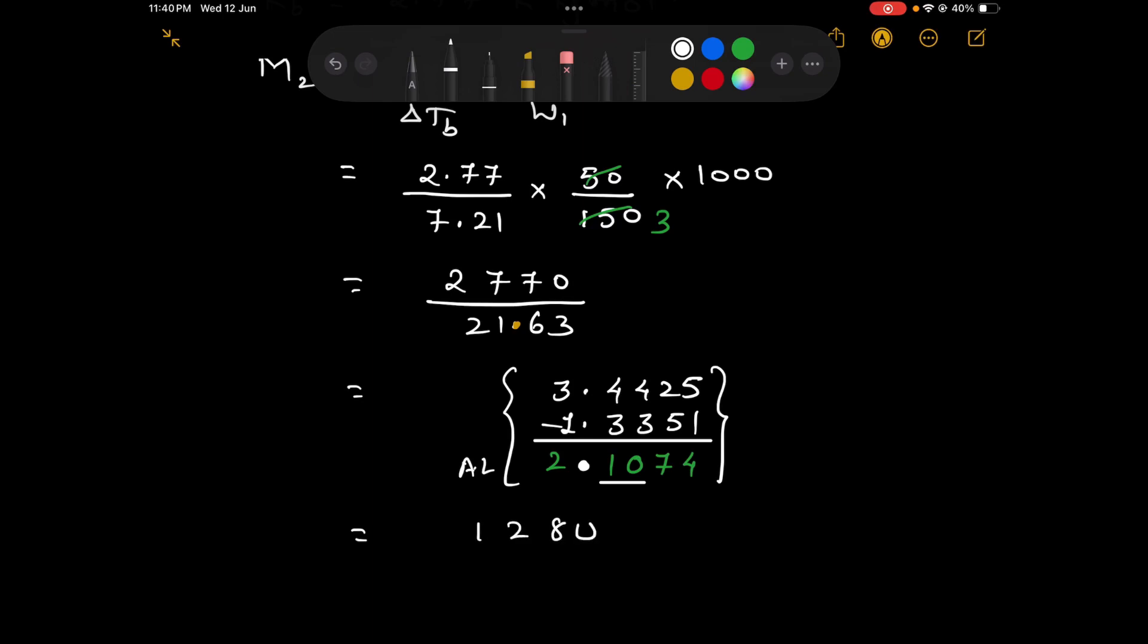And the antilog comes out to be 1280. Directly put a decimal after 1 digit into 10 raise to 2.